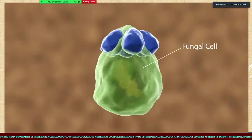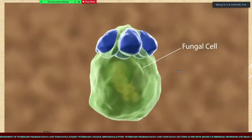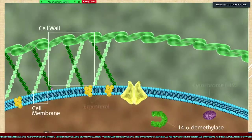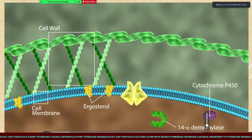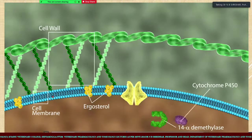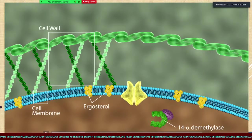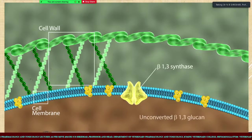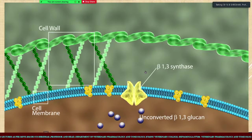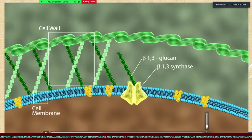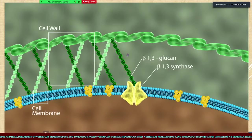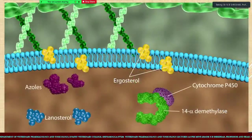We will see the graphical representation of the mechanism of action of antifungal drugs. The fungus has a specific cell wall containing a cell membrane inside. These are the ergosterols, which are the building blocks of the cell membrane. There is an enzyme, beta-1,3-synthase, involved in beta-1,3-glucan synthesis.